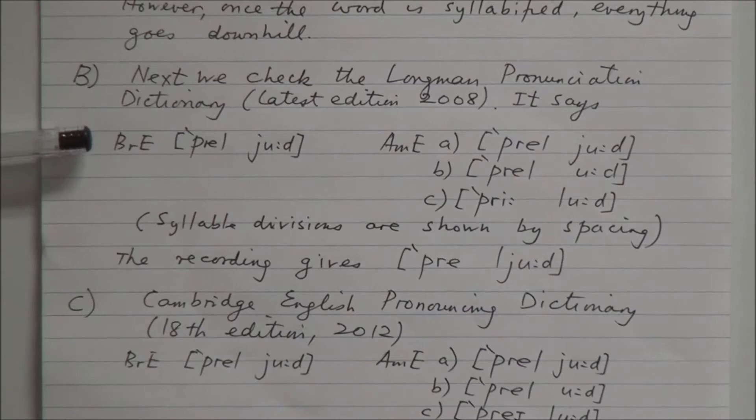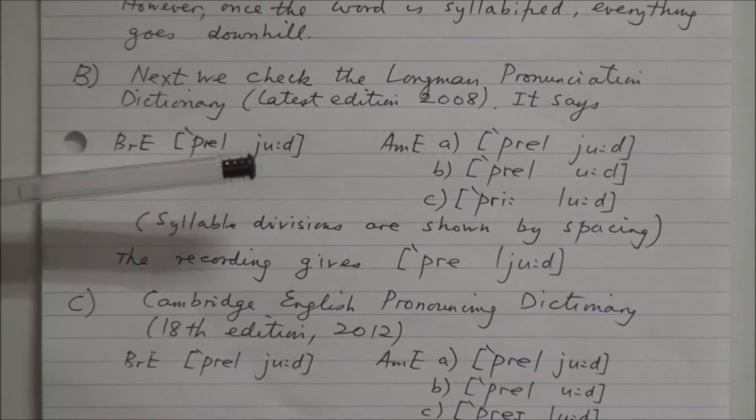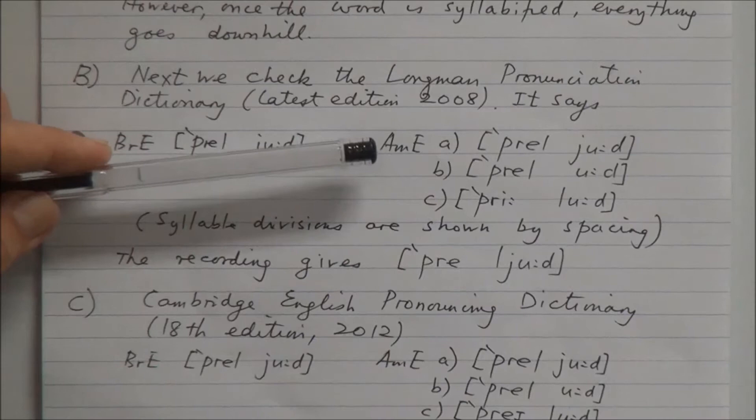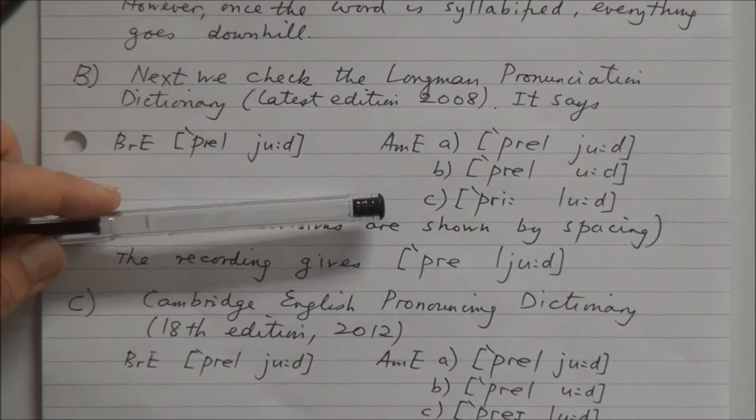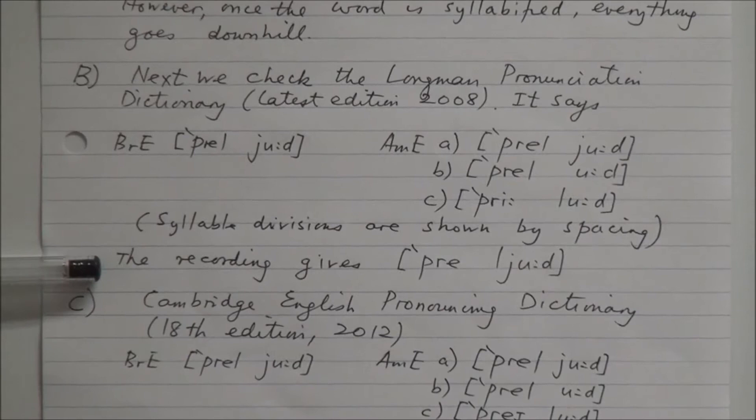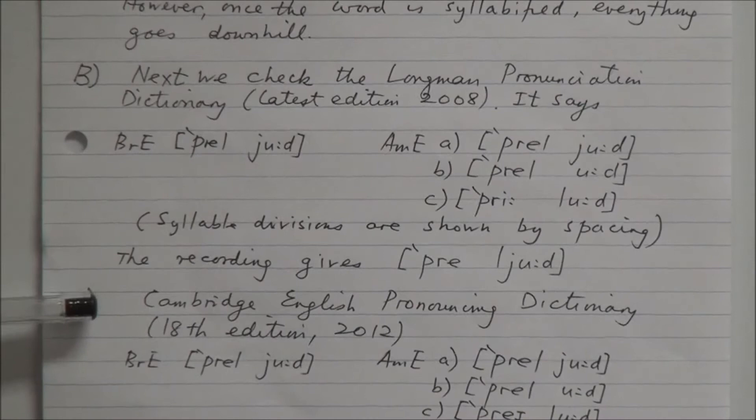It gives a transcription for British English and multiple variants for American English — options A, B, and C. Obviously, all of them are different from the actual recording.